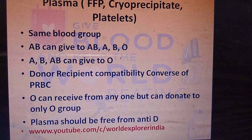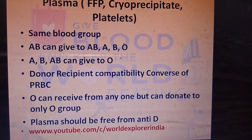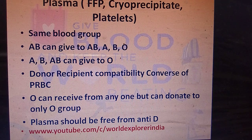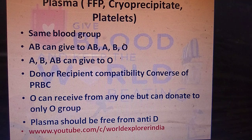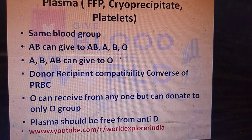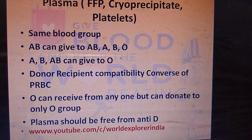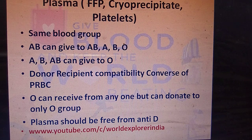Plasma should usually be given of the same blood group. For plasma, the donor-recipient compatibility is the converse of PRBC — exactly the opposite of what applies to packed red blood cells. For plasma, O can receive from anyone but can donate only to the O group. Plasma should be free from NTDs (Nucleic acid Testing Detectable infections).